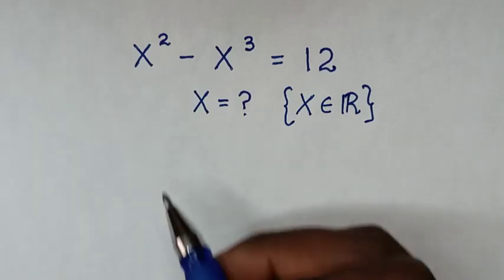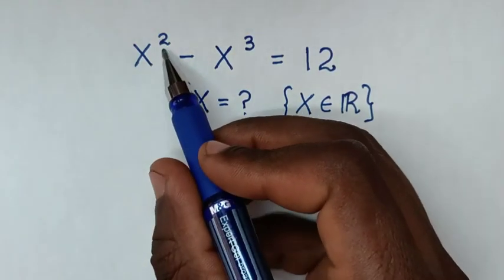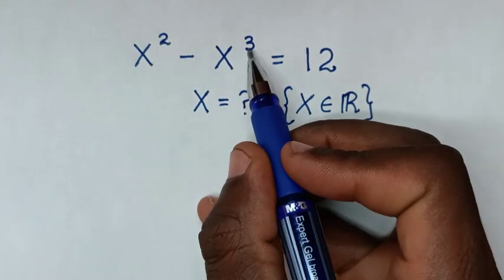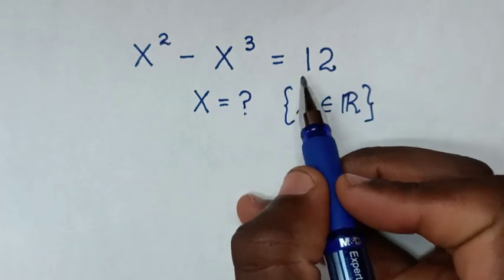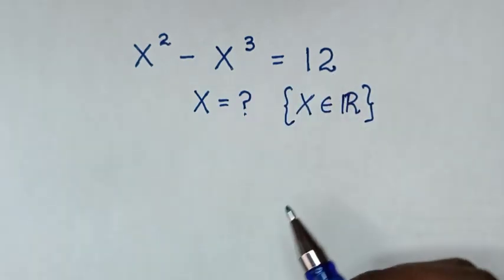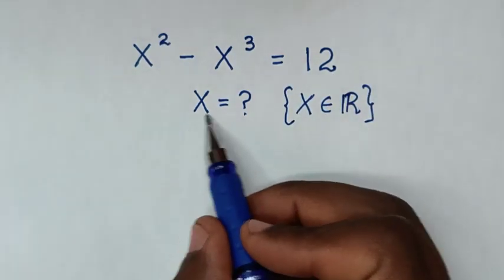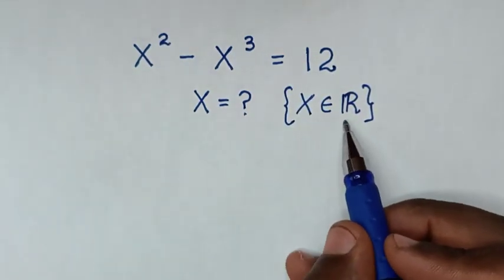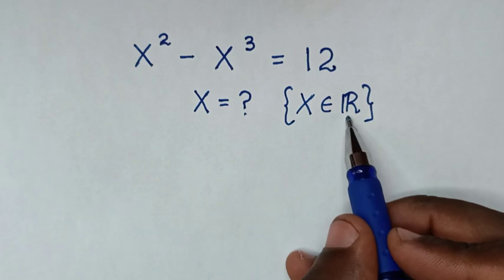Hello. How to solve x squared minus x cubed is equal to 12? To find the value of x, we say that x is an element of the real numbers.